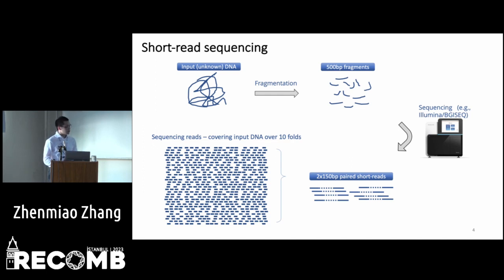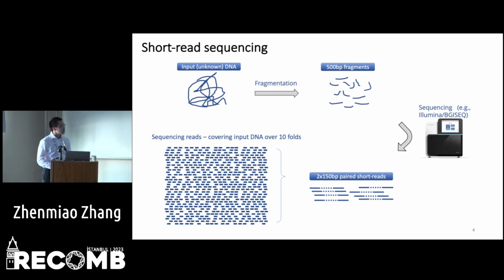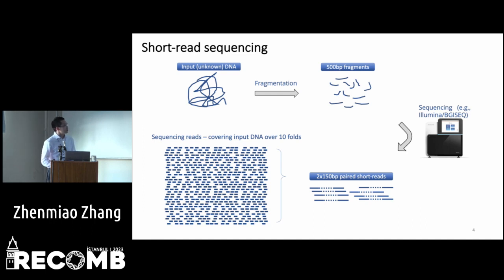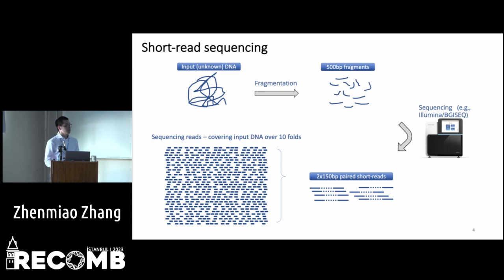I would also like to introduce some background on sequencing. Short-read sequencing is the most commonly used sequencing technology. From the input unknown DNA, it will fragment the DNA into approximately 500 bp fragments. These fragments are sequenced by sequencing machines. Popular short-read sequencing technologies include Illumina sequencing and BGI sequencing. The sequencing will produce paired reads, where the two reads of a pair come from the two ends of the 500 bp fragments.